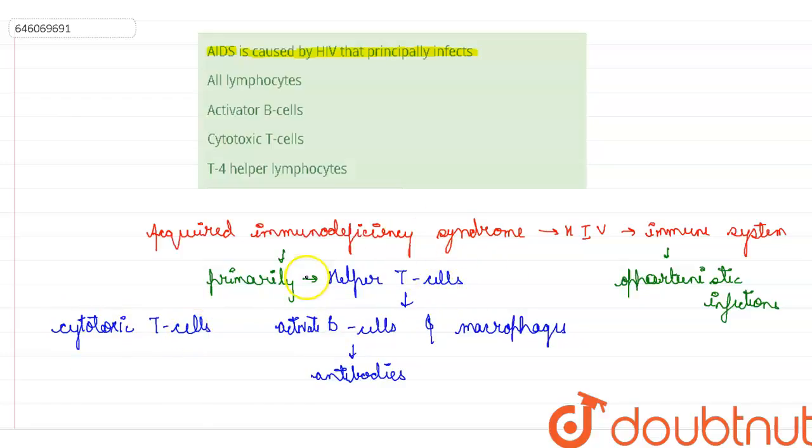But when AIDS affects these helper T cells, then there will be no activation of the B cells, so there will be no formation of the antibodies and no activation of cytotoxic T cells. So there will be no ingesting of the microbes.